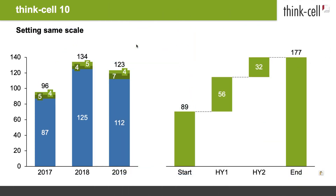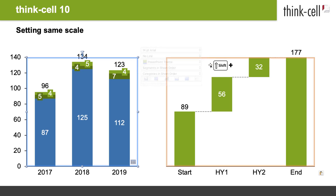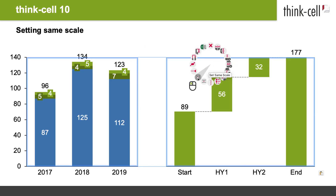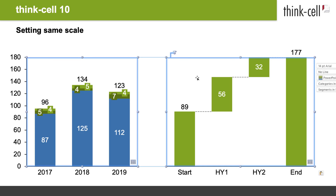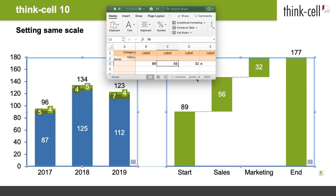In regards to enforcing the same scale on several charts, ThinkCell 10 has taken a big step forward. Before ThinkCell 10, you could already set the same value scale for several charts, but this was just a one-shot action and had to be redone whenever the data in one chart changed. In ThinkCell 10, setting the same scale for several charts is a persistent choice, and ThinkCell will automatically adjust all scales whenever your data changes.